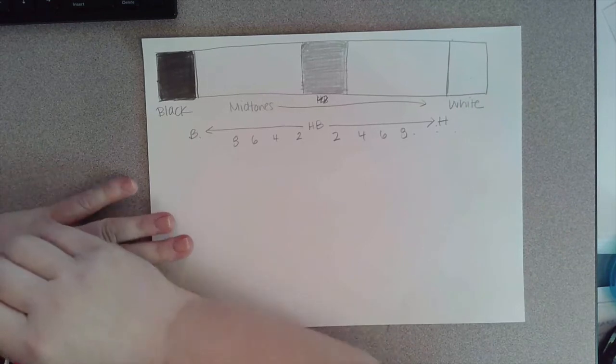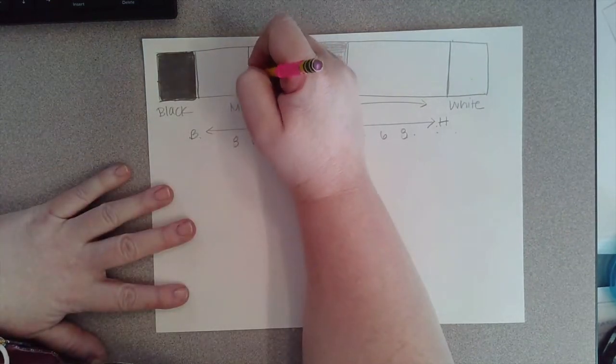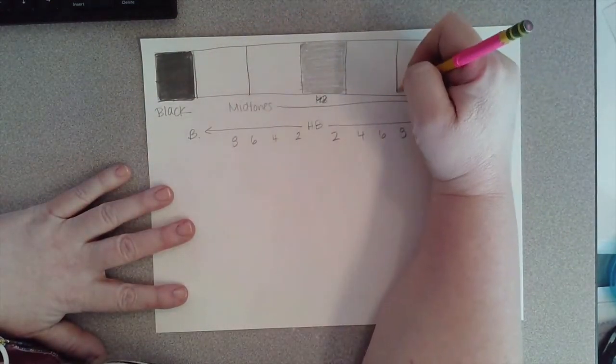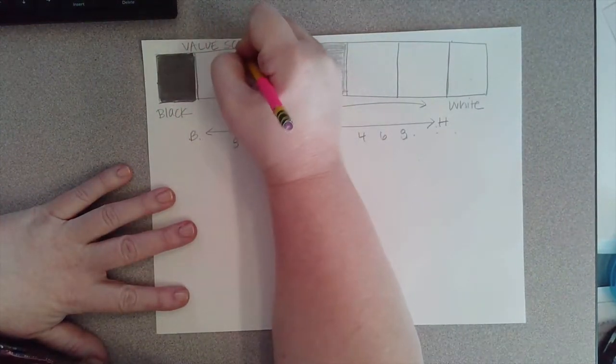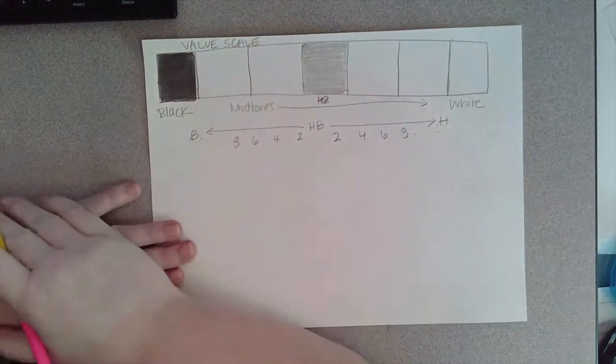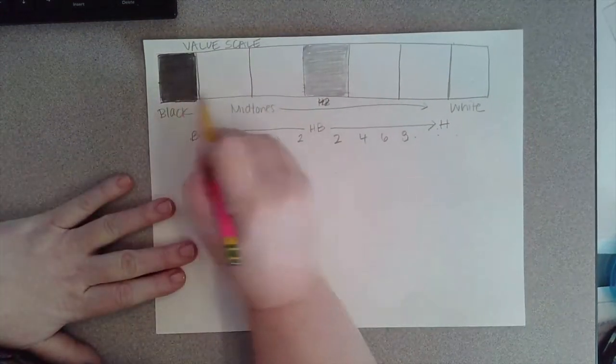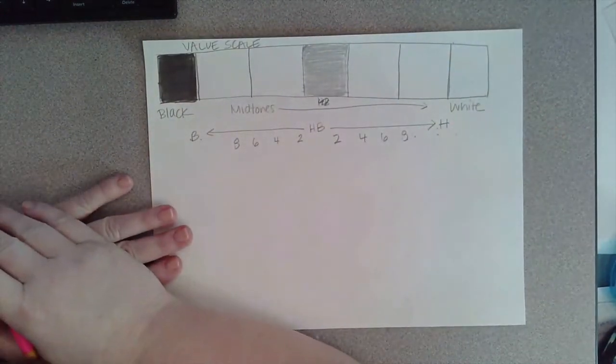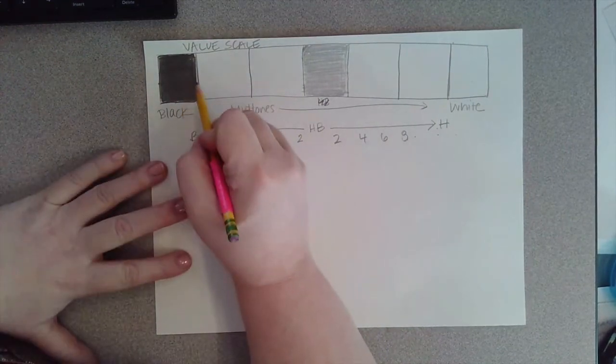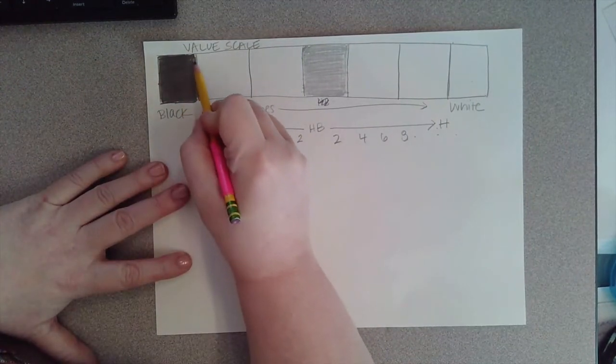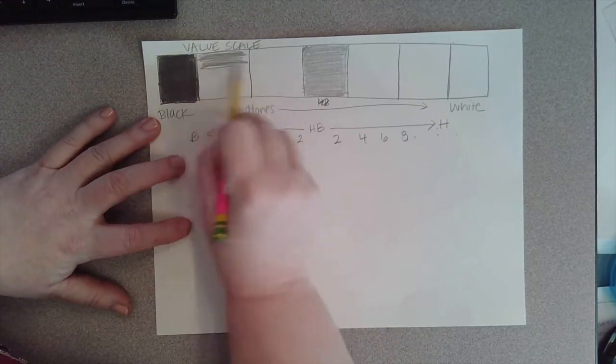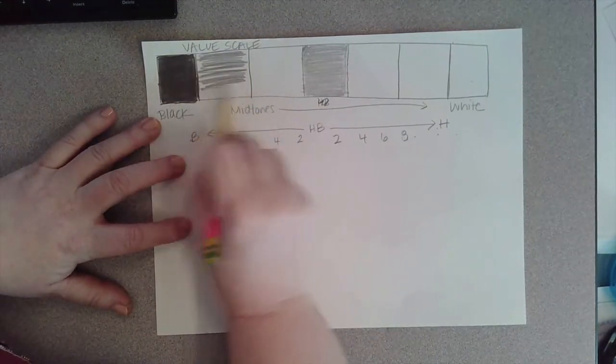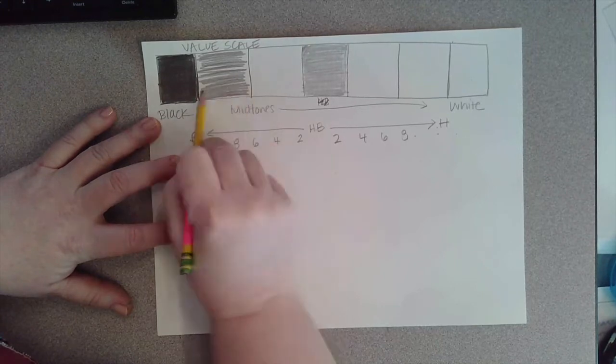I'm going to draw two more lines now for our value scale. The reason it's called a scale is because we are going from dark to light and you're going to see it turn into a gradient. I'm going to come from this dark, dark black and go up one level, so it should still be pretty dark but not quite as dark. We're not going fully black yet—we're going dark gray.